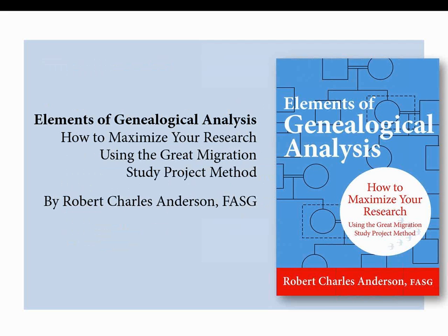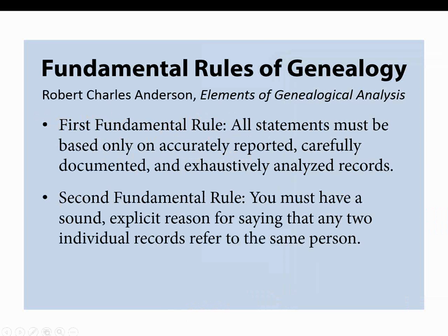Another view is Robert Charles Anderson's Elements of Genealogical Analysis, available on the NEHGS bookstore. Bob's version has two fundamental rules of genealogy. First: all statements must be based only on accurately reported, carefully documented, and exhaustively analyzed records. Second: you must have a sound, explicit reason for saying that any two individual records refer to the same person. I suggest you put Bob's list and the Board for Certification list on a note card and put it up before your computer so you will always remember them.